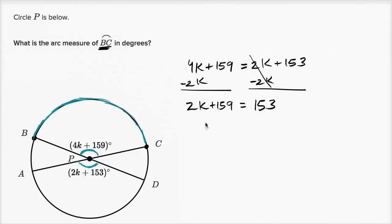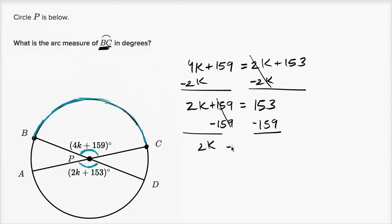Now let's subtract 159 from both sides to isolate the K term. That leaves us with 2K equals 153 minus 159, which is negative 6. Dividing both sides by 2, K is equal to negative 3.